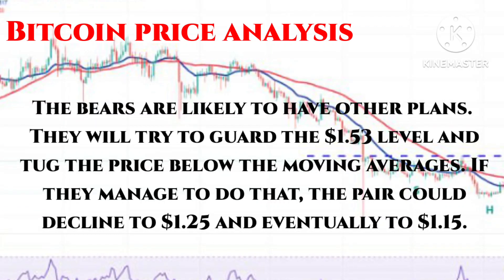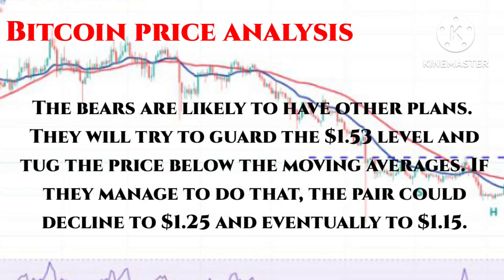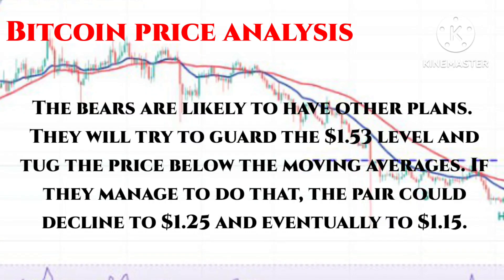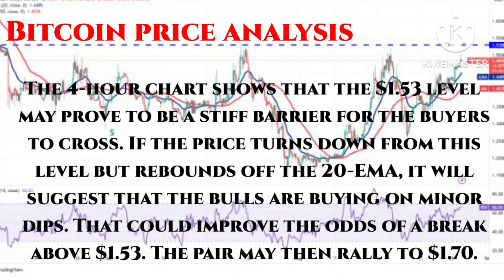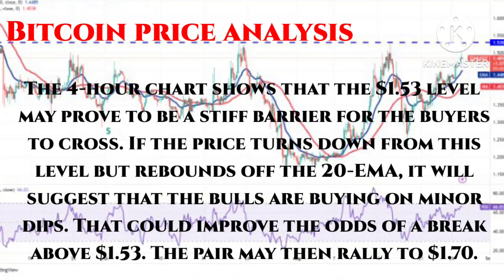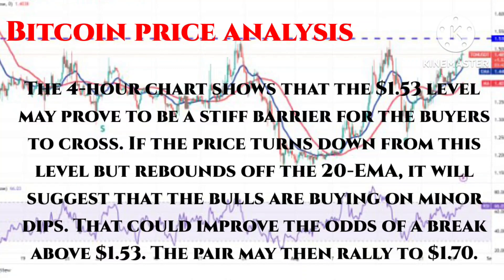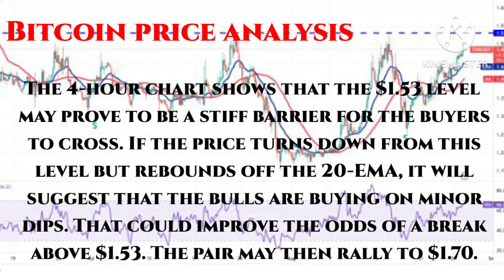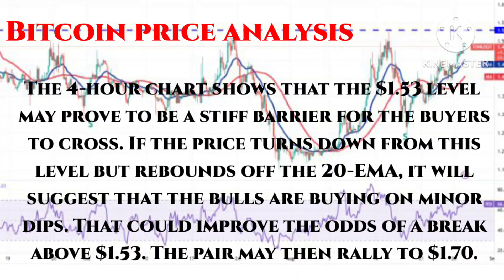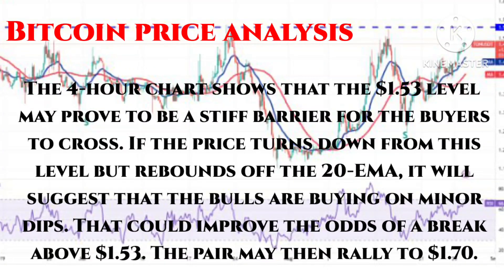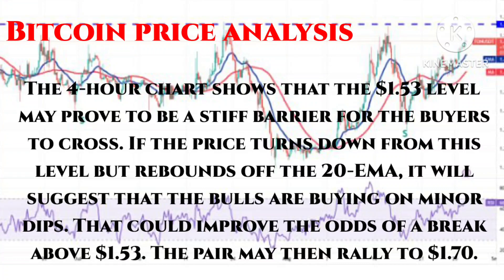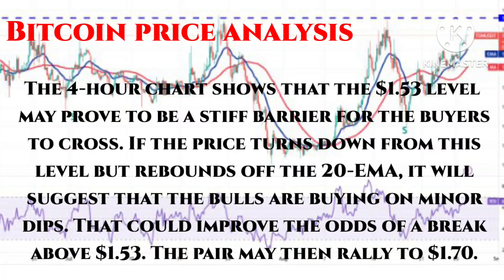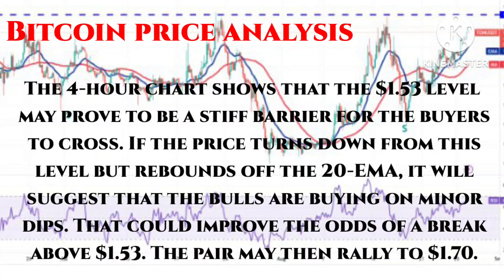If they manage to do that, the pair could decline to one point two five dollars and eventually to one point one five dollars. The four-hour chart shows that the one point five three dollar level may prove to be a stiff barrier for buyers to cross. If the price turns down from this level but rebounds off the 20 MA, it will suggest that the bulls are buying on minor dips, which could improve the odds of a break above one point five three dollars.